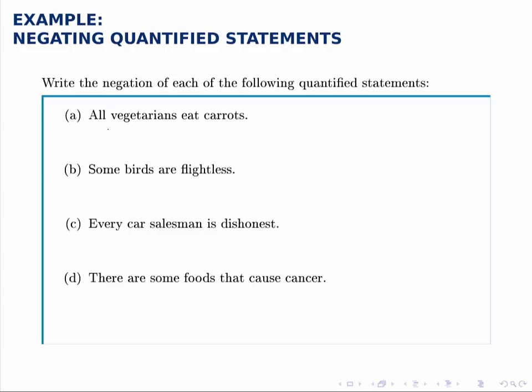To negate the first statement, where we're told that all vegetarians eat carrots, the only thing we have to do to negate this — to prove it false, in other words — is to find at least one vegetarian that does not eat carrots. So this claims that all vegetarians do; if we can find at least one that does not, we have negated this statement. So we could write: some vegetarians do not eat carrots.